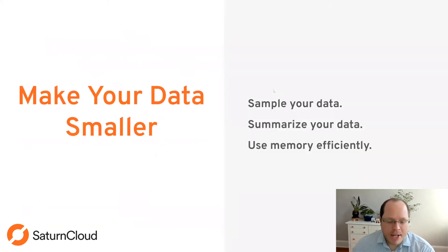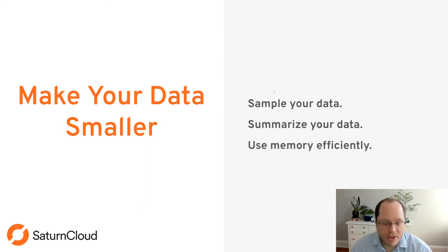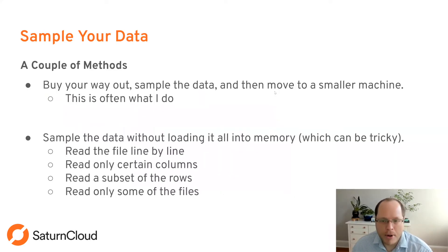The next strategy for memory constraints is making your data smaller. There are three sub-categories: you can sample your data and just get a small piece of it, you can summarize it using aggregate statistics, or you can use memory more efficiently.